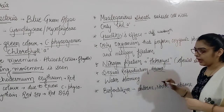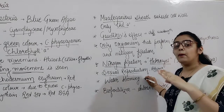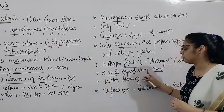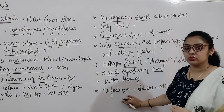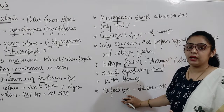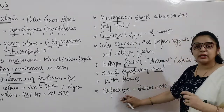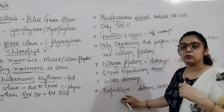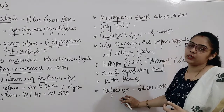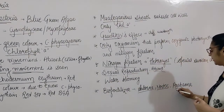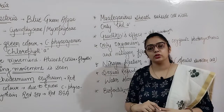Sexual reproduction is absent in cyanobacteria. When cyanobacteria grows in excess amount and shows excess multiplication, that is known as water blooming. Next, cyanobacteria acts as a biofertilizer because it helps in nitrogen fixation — specially in rice paddy fields. It is known as a biofertilizer. The specific genera responsible for nitrogen fixation include Anabaena, Nostoc, Azolla, and Aulosira.